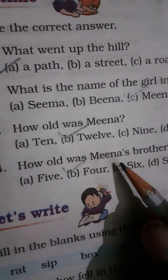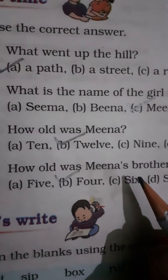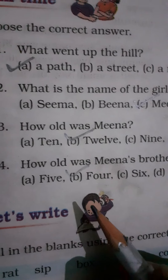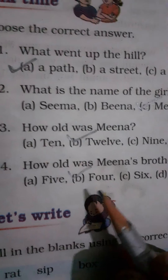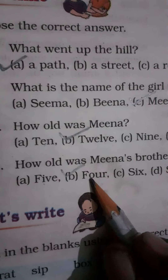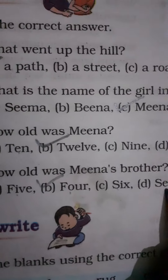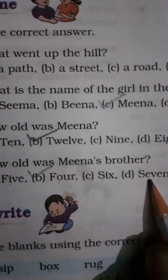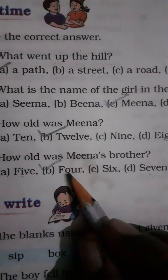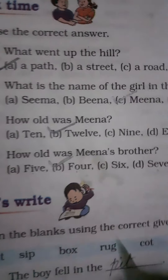Fourth multiple choice question: How old was Meena's brother? Meena's brother was four years old. The options are five, four, six, and seven. The answer is four — tick four.